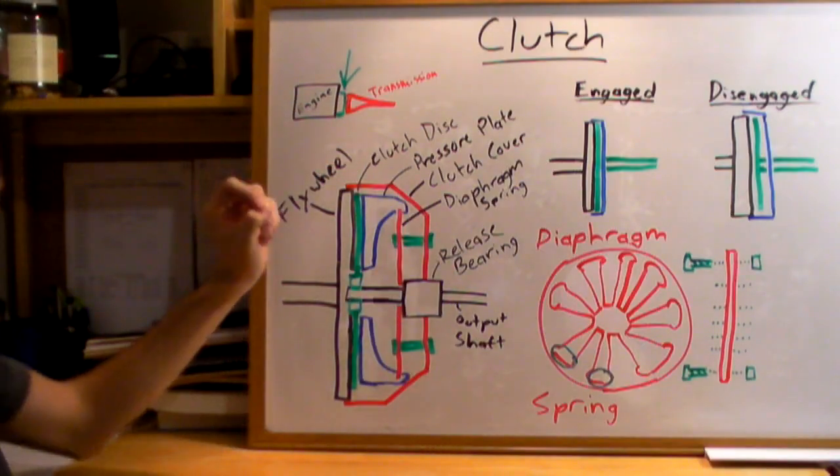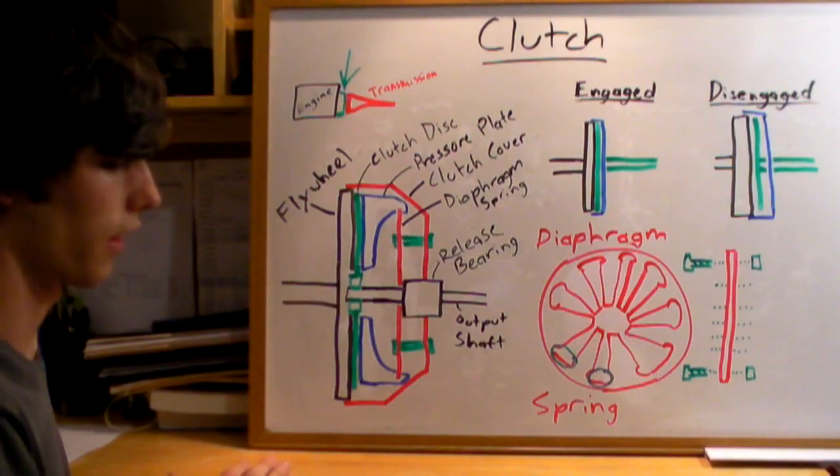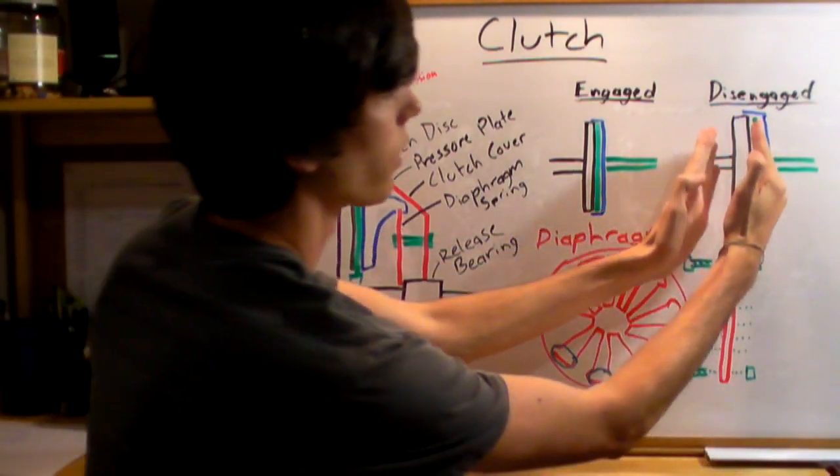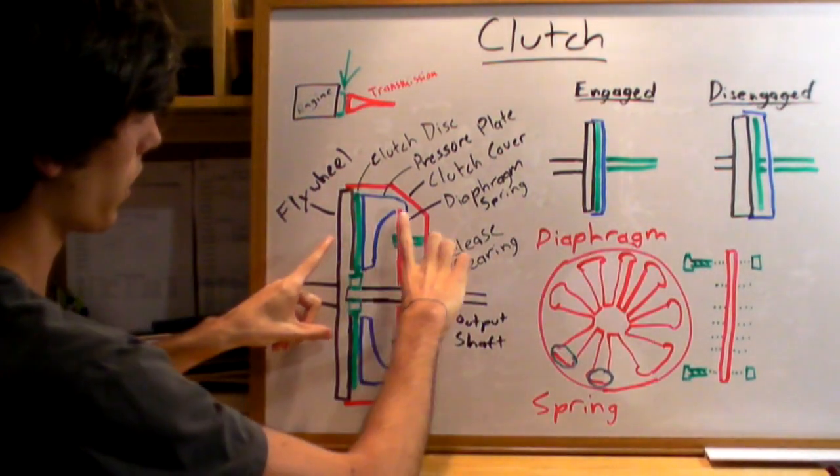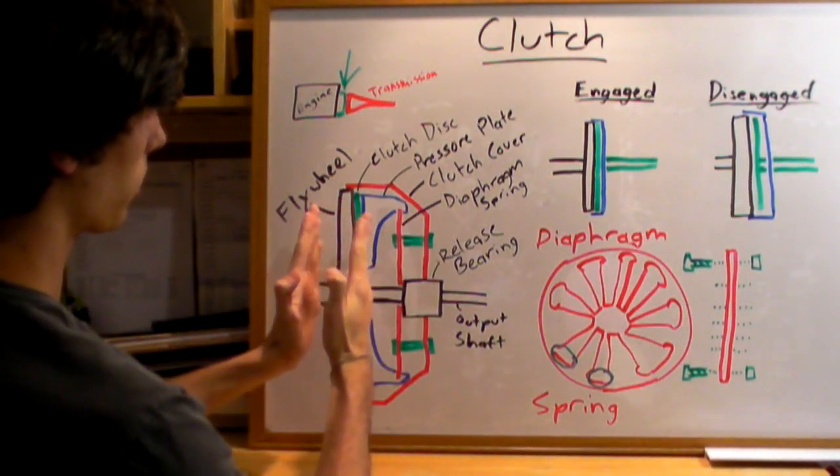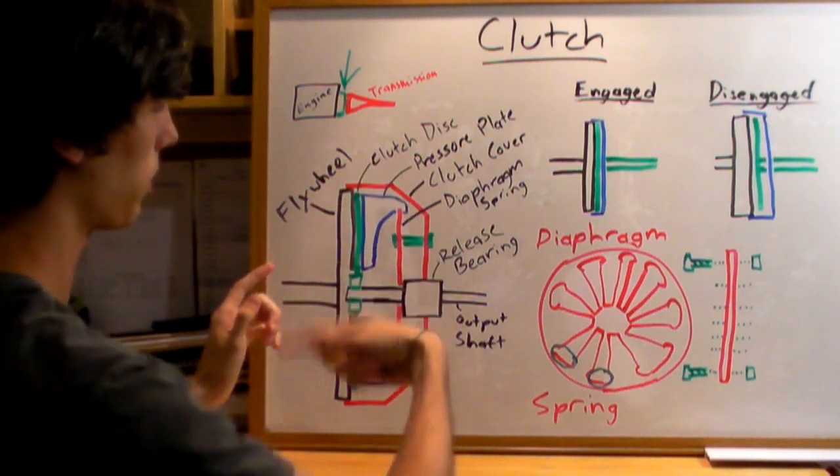So what happens is when you push in that clutch pedal, you disengage the clutch. It's going to look like this. You're going to pull that blue pressure plate off of the clutch disc, which is squeezing the clutch disc between the flywheel and the pressure plate so that they rotate at the same speed.